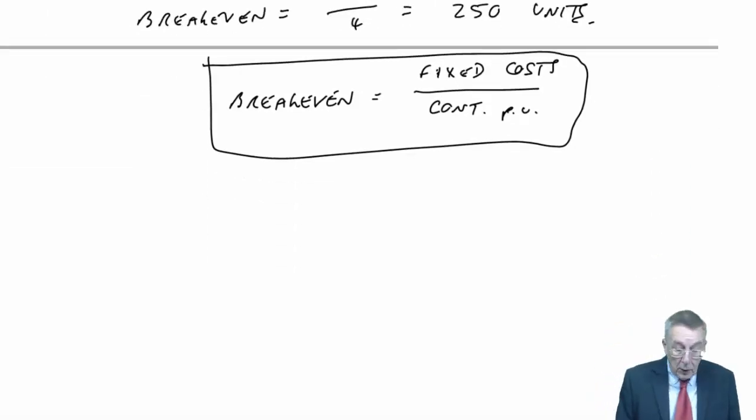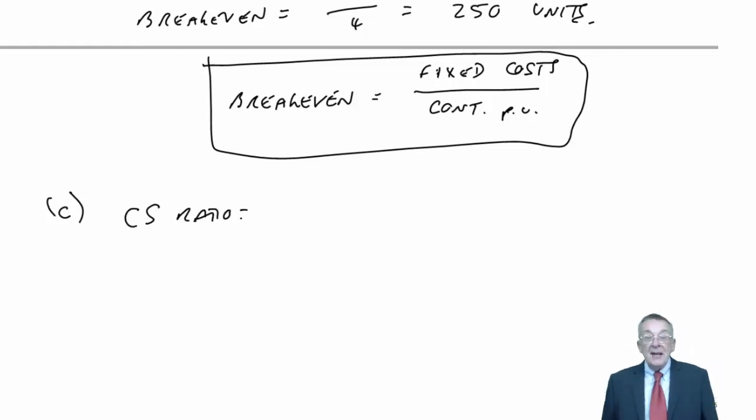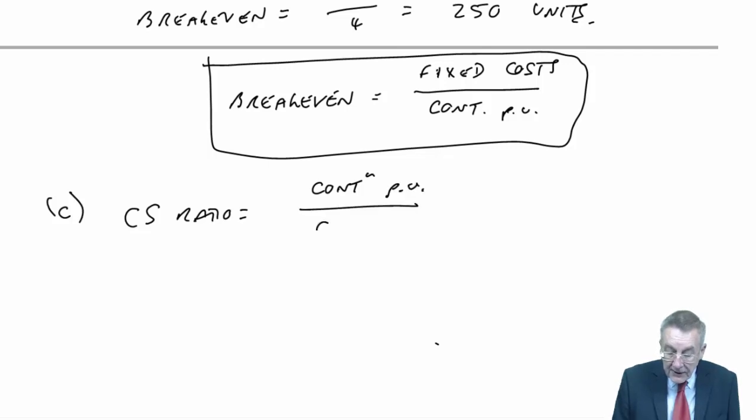The next one asks what's the CS ratio of the product. The CS ratio is exactly what it says. CS is contribution, S is sales. It's the ratio of the contribution per unit to the selling price per unit.